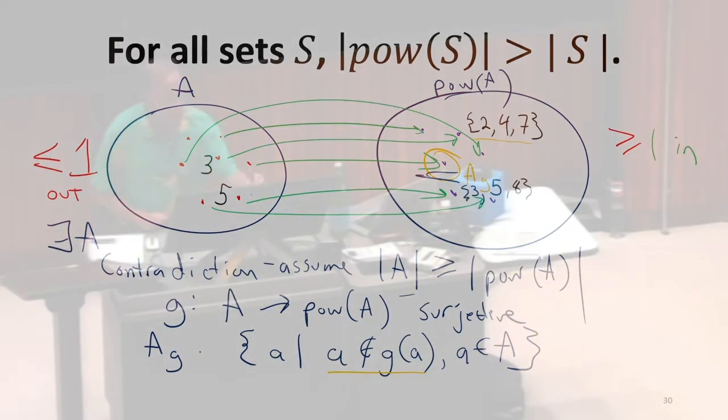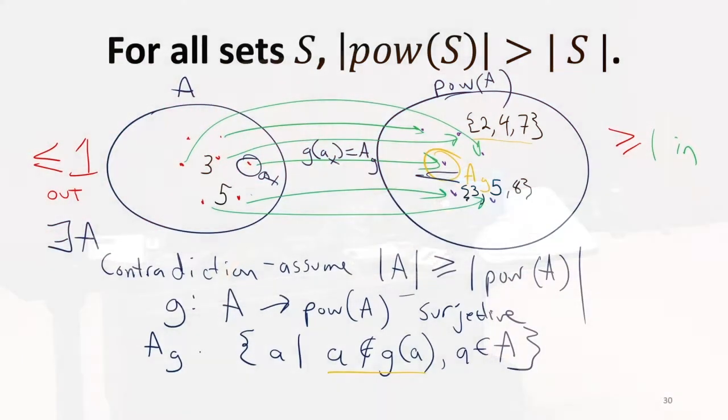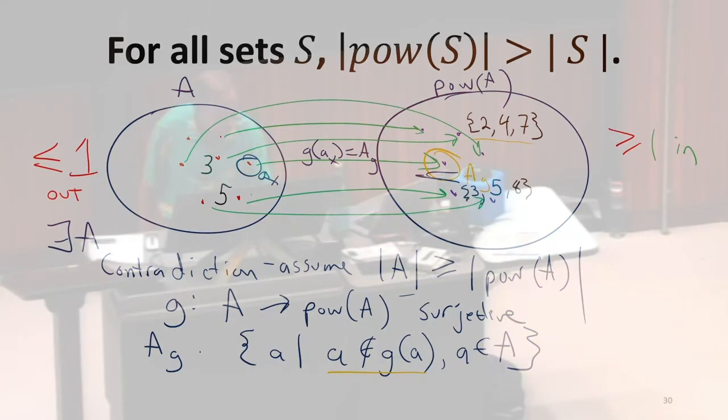There's got to be some element in A, we'll call it A of X, where G of A of X is equal to A of G. If that mapping exists, then there has to be some element that maps to the set that contains all of the elements that don't map to themselves. So is A of X inside AG? Let's think about the possibilities. So now we've got A of X.